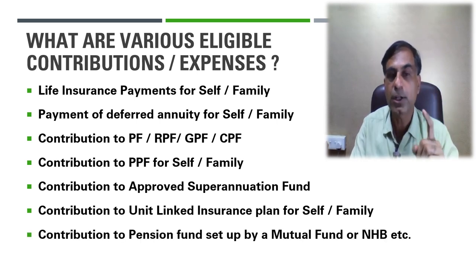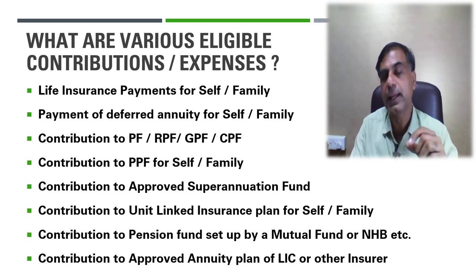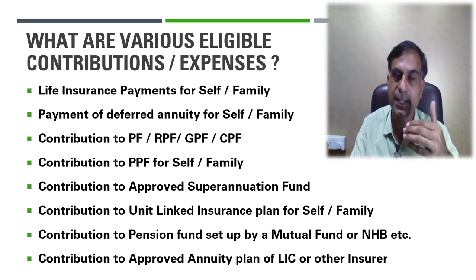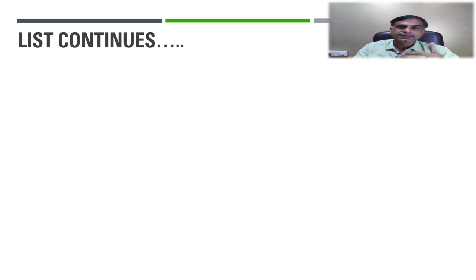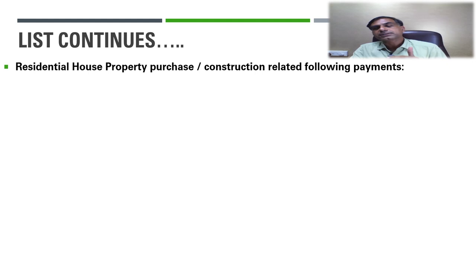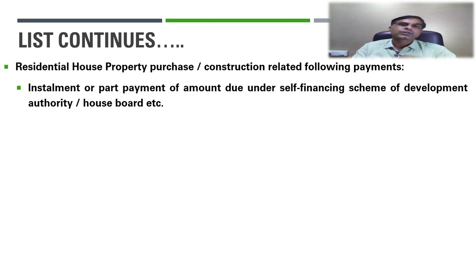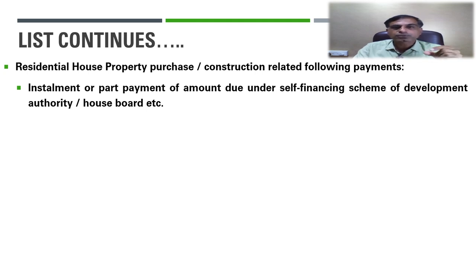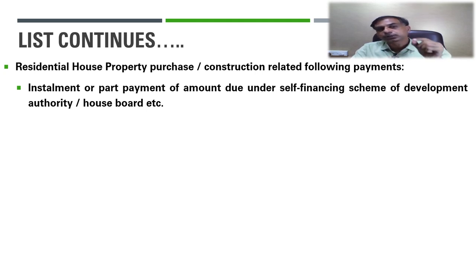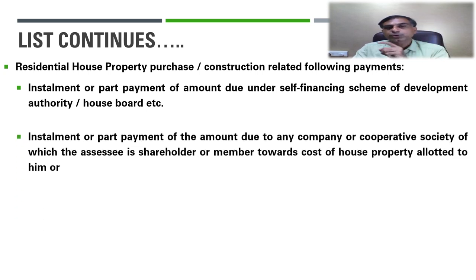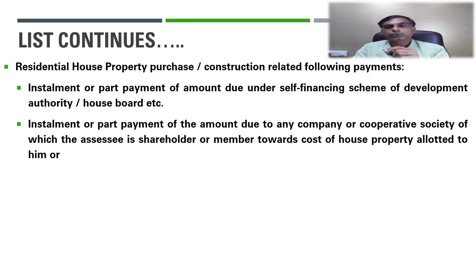You need to keep in mind the definition of 'family' carefully. Contribution to a pension fund set up by a mutual fund or National Housing Board is allowed. Contribution to an approved annuity plan of LIC or other insurer is also allowed under Section 80C. Repayment of the principal amount of a home loan is allowed under Section 80C — note that interest is covered under Section 24(b), not 80C. Installment or part payment towards the cost of house property allotted by a company or cooperative society is also allowed.